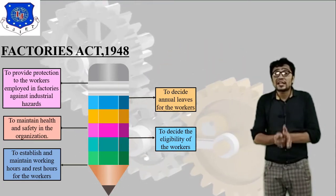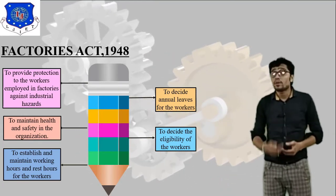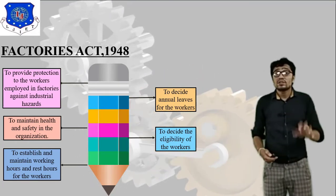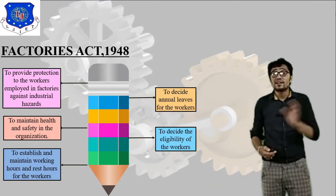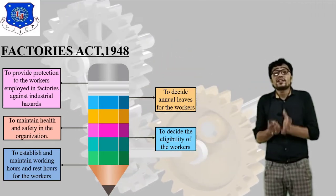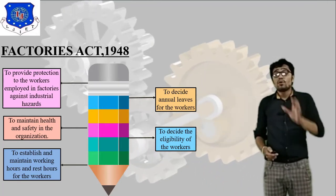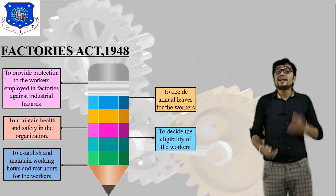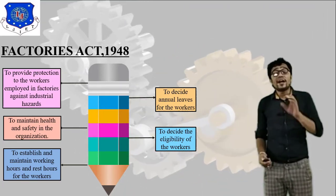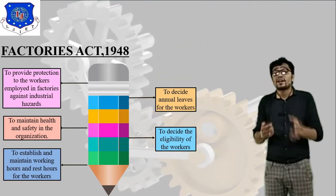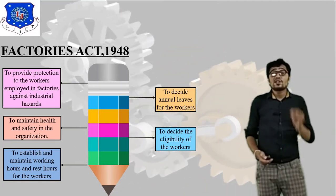These are the different objectives of Factories Act 1948. Our task is to improve productivity and profit, by providing protection to the worker, maintaining health and safety, establishing working hours and rest hours, deciding annual leave, and deciding eligibility of the worker. This act is basically focused on worker efficiency, worker salary, annual leave, and eligibility.